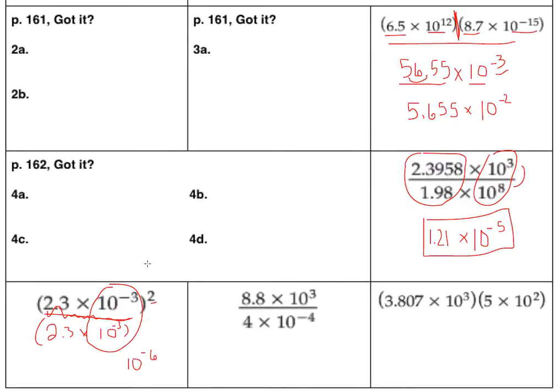That's actually looking ahead to another rule with exponents. When you have a power raised to the power, you actually multiply. So negative 3 times 2 is negative 6.